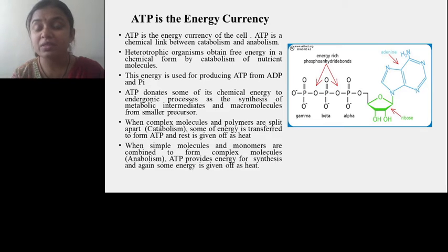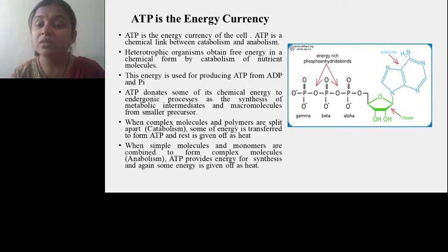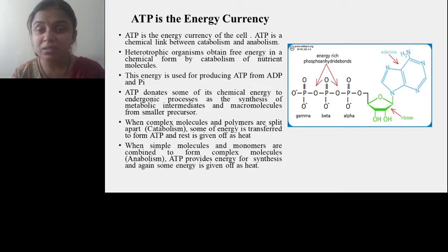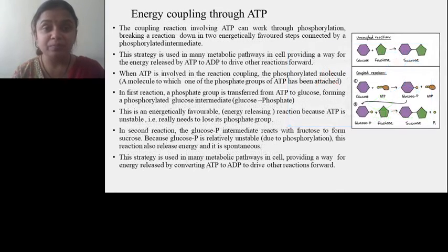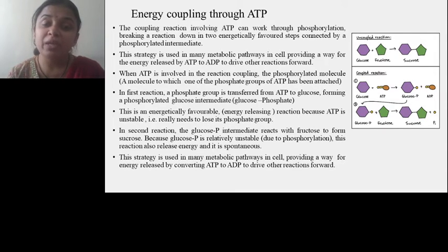When two phosphates are released, the remaining structure is called adenosine monophosphate because it has only one phosphate. When there are two phosphates it is called ADP, that is adenosine diphosphate. This is the structure of ATP.